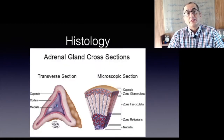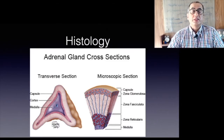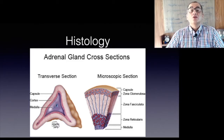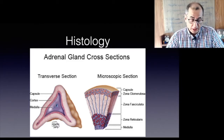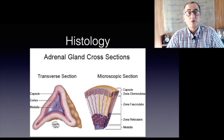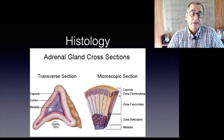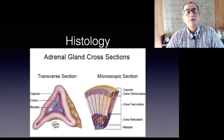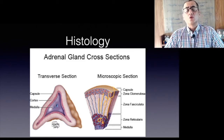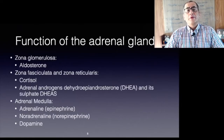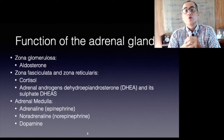The adrenal cortex is characterized by a zonal configuration. The outer zona glomerulosa contains small compact cells. The zona fasciculata can be identified by larger lipoid cells arranged in a radial pattern. Compact and pigmented cells characterize the inner zona reticularis. The adrenal medulla consists of a layer of large chromaffin cells which store catecholamine granules.